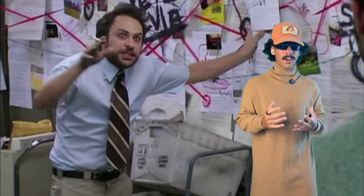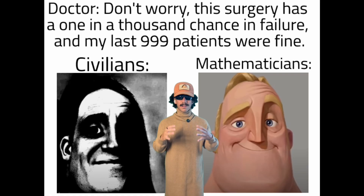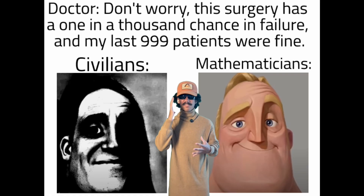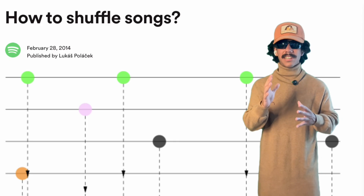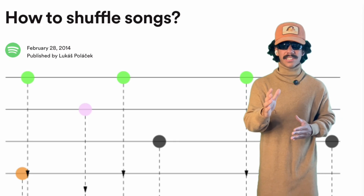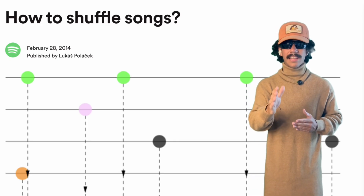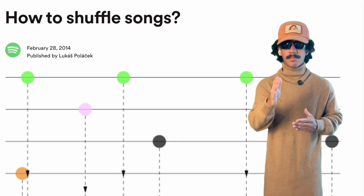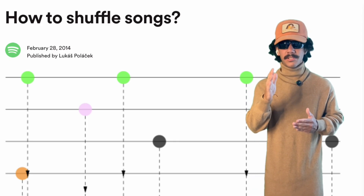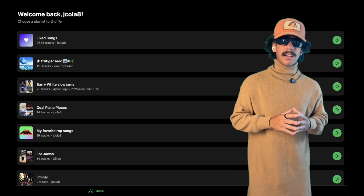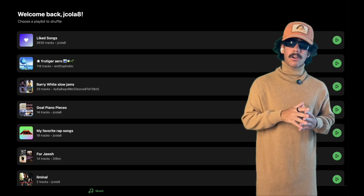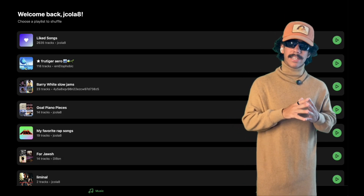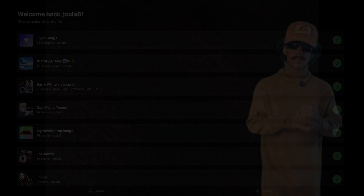The real story actually involves thousands of user complaints, a misunderstanding of how our brains perceive patterns, and a deliberate choice by Spotify's engineers that has changed the way millions of people listen to music. I'm going to walk us through how we got here and show you how I coded my own app to reintroduce randomness into my life.